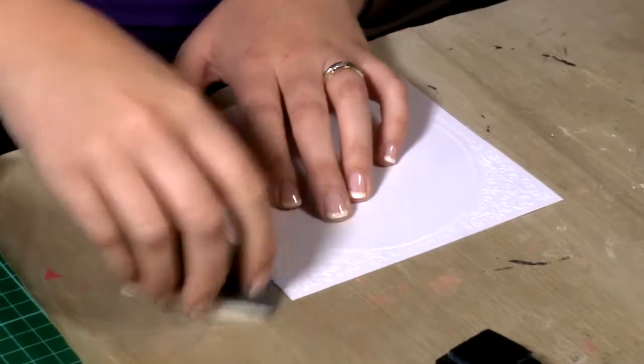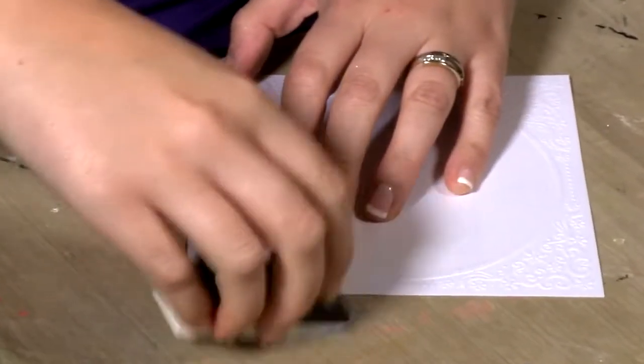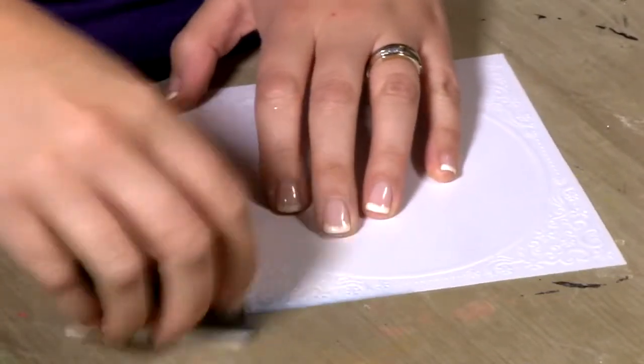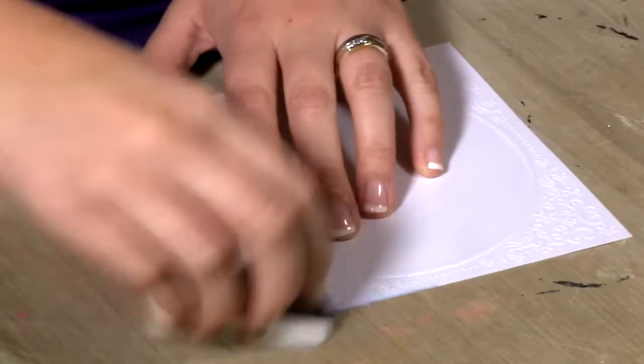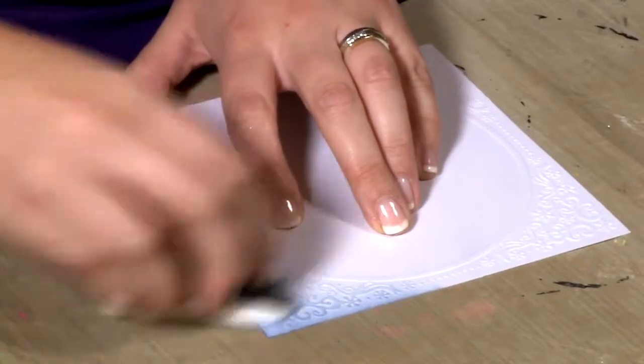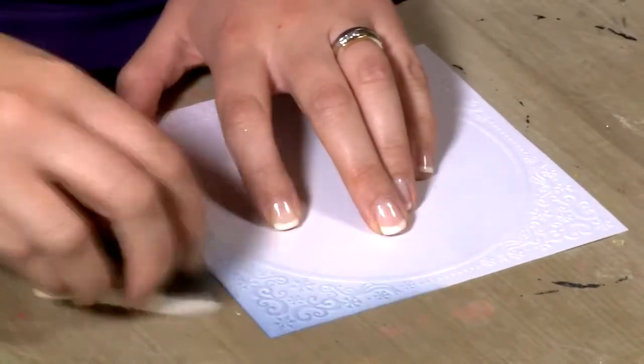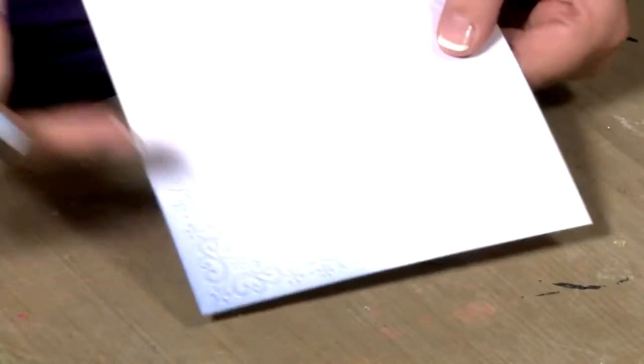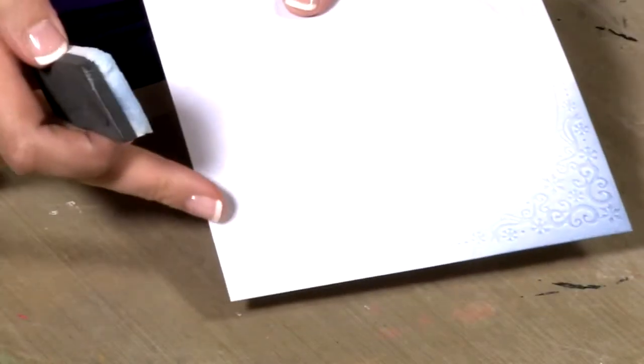You start ever so gently rubbing it around the corner. As we build up, it highlights where the embossed piece is. You can see it's really adding the most color onto that embossed corner. Look at the difference it makes where we've got it on the embossed corner and where it's just plain.